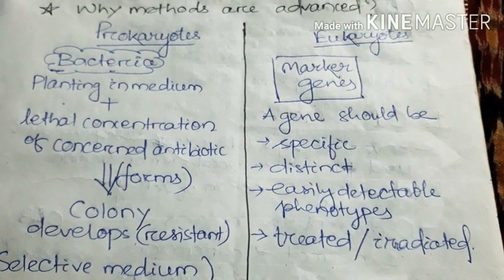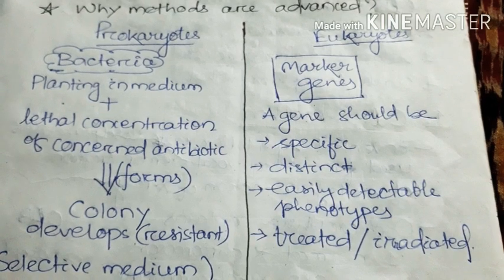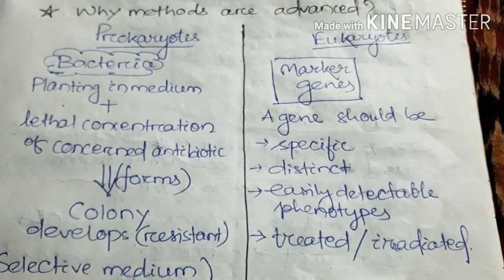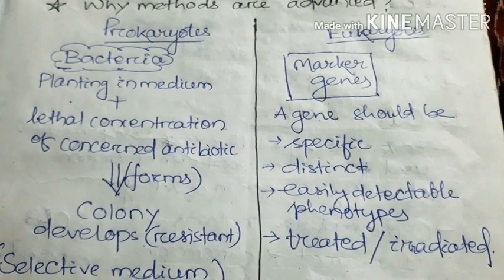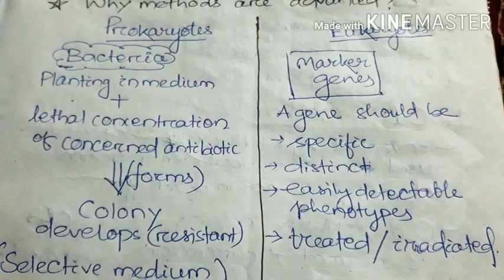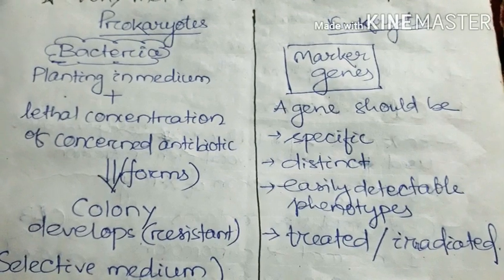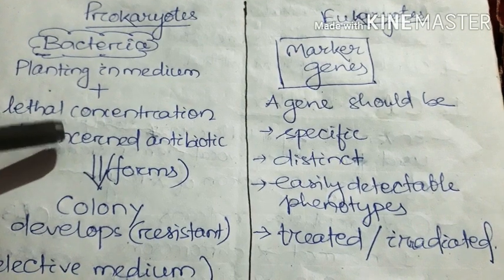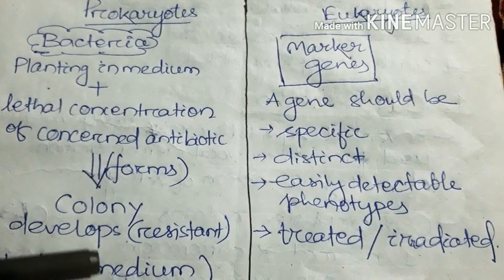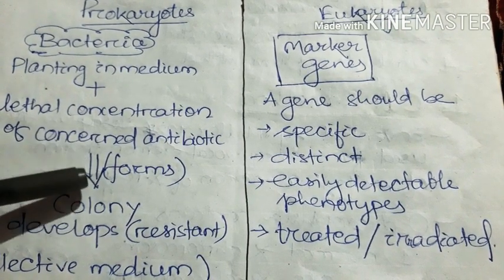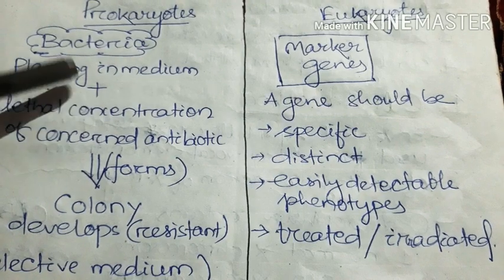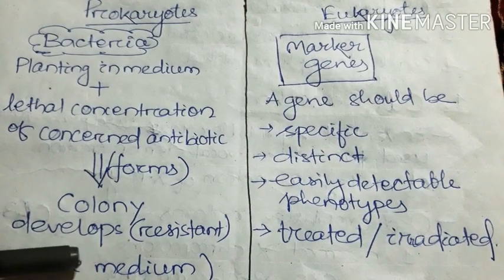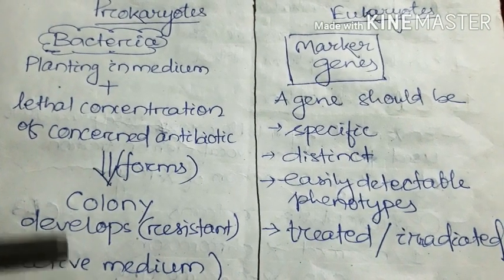In prokaryotes — that is, in bacteria — if a mutation occurs, the task is: first, plate the bacteria in a medium, then add a lethal concentration of antibiotics to this medium. After some time, the bacteria present in this medium form a colony. This is called a selective medium, and this is the process through which bacterial mutation detection is done.